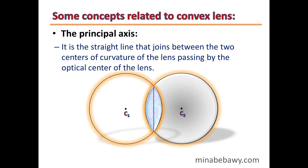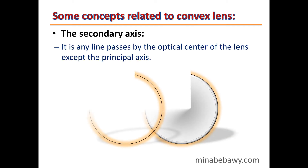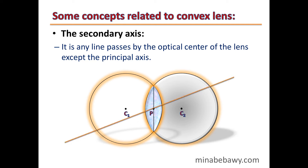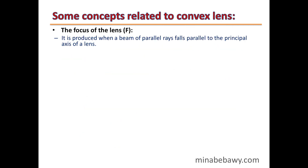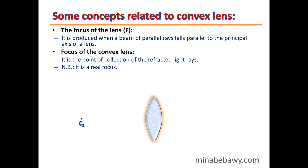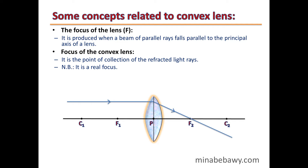The principal axis joins the two centers of curvature of the lens, passing through the optical center. The secondary axis is any line that passes through the optical center except the principal axis. The focus of the lens (F) is produced when a beam of parallel rays falls parallel to the principal axis. For a convex lens, the focus is the point of collection of the refracted light rays — it is a real focus.